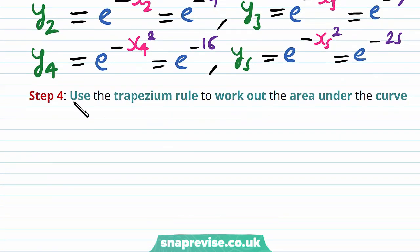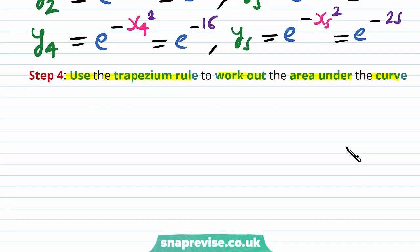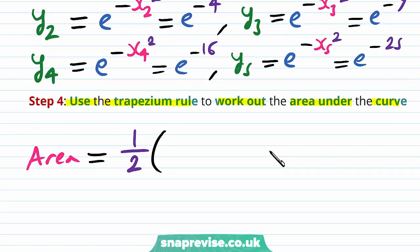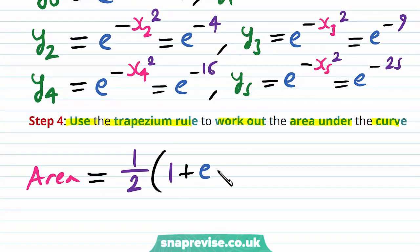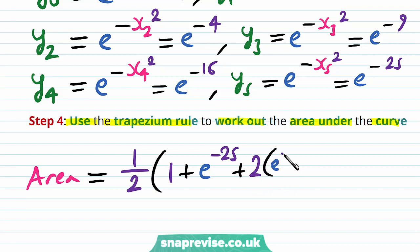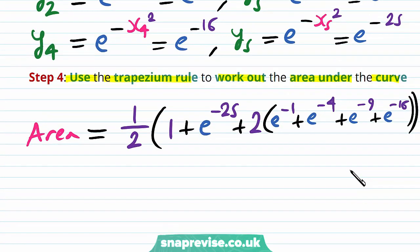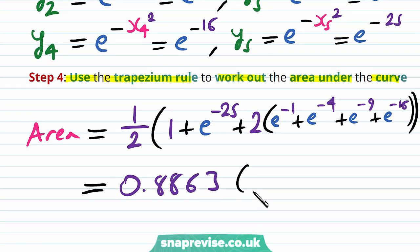Our fourth step is to use the trapezium rule to work out the area under the curve. The area equals h over 2, which is 1 over 2, multiplied by the first and last y values (1 plus e to the power of minus 25), plus two lots of the middle values: e to the power of minus 1, plus e to the power of minus 4, plus e to the power of minus 9, plus e to the power of minus 16. Working this out using a calculator, we get 0.8863 to four decimal places.